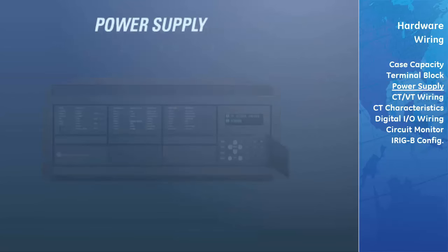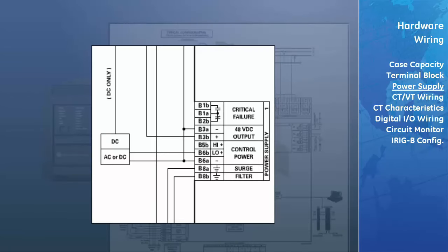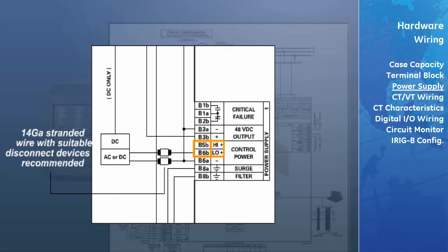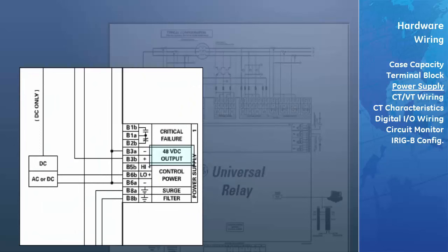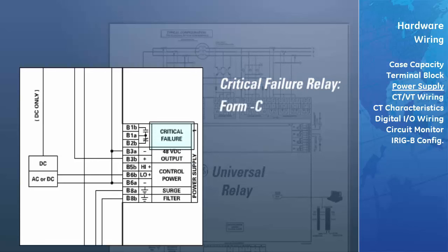A UR wiring example is shown. The power supply module provides power to the relay and supplies power for dry contact input connections. The power supply module is designed for two voltage ranges; as specified in the UR manual, each range has a dedicated input for proper operation. 14-gauge stranded wire with suitable disconnect devices is recommended. The power supply module provides 48 VDC power for dry contact input connections and a critical failure relay, which is a Form C that will be energized once control power is applied and the relay has successfully booted with no critical self-test failures. If any ongoing self-test detects a critical failure or control power is lost, the relay will de-energize.